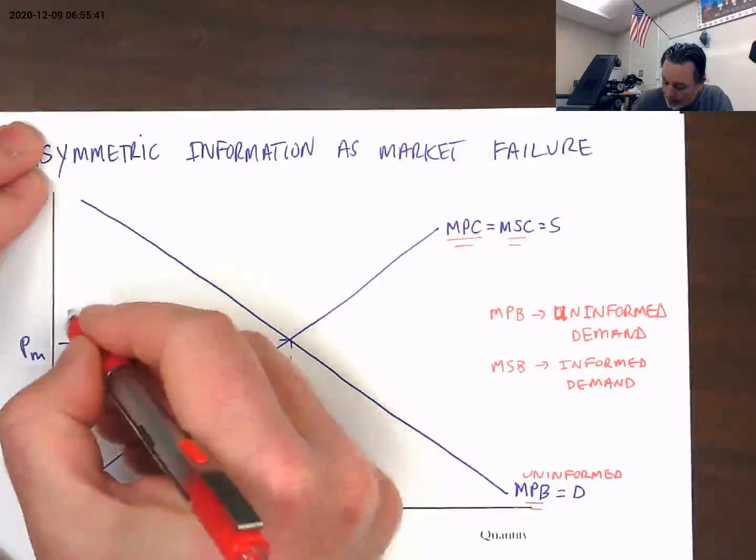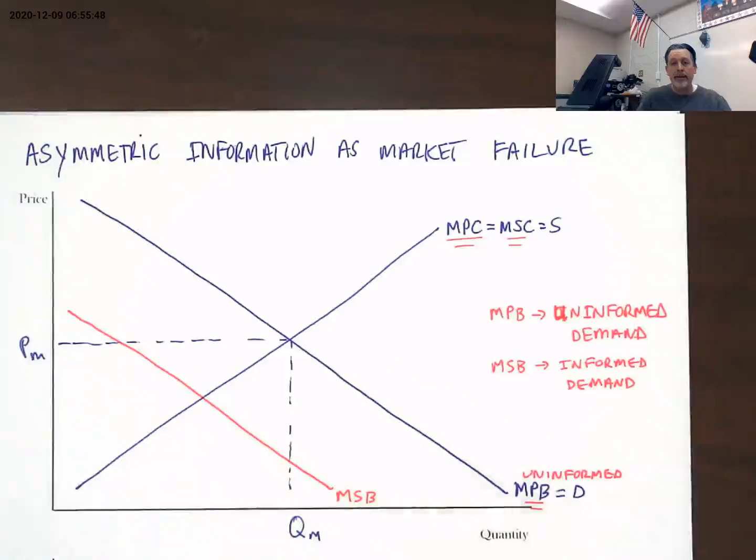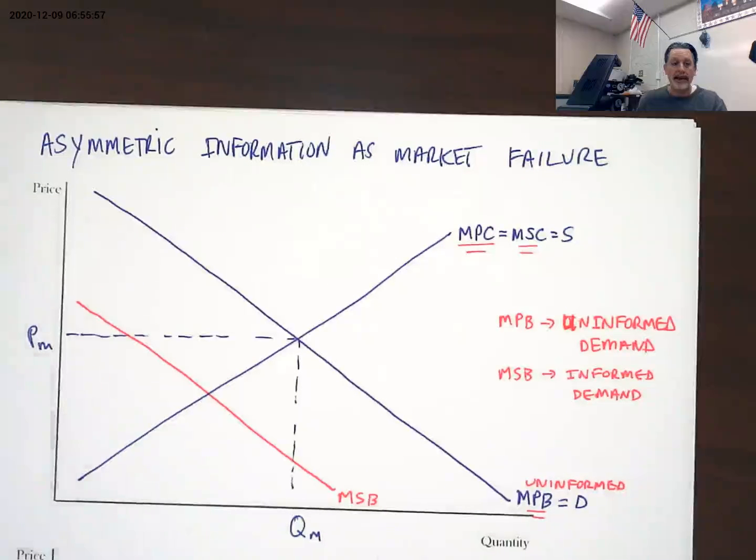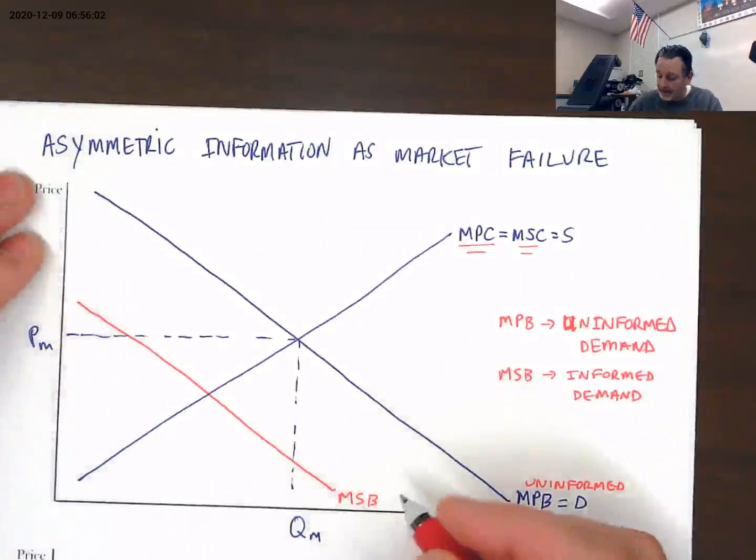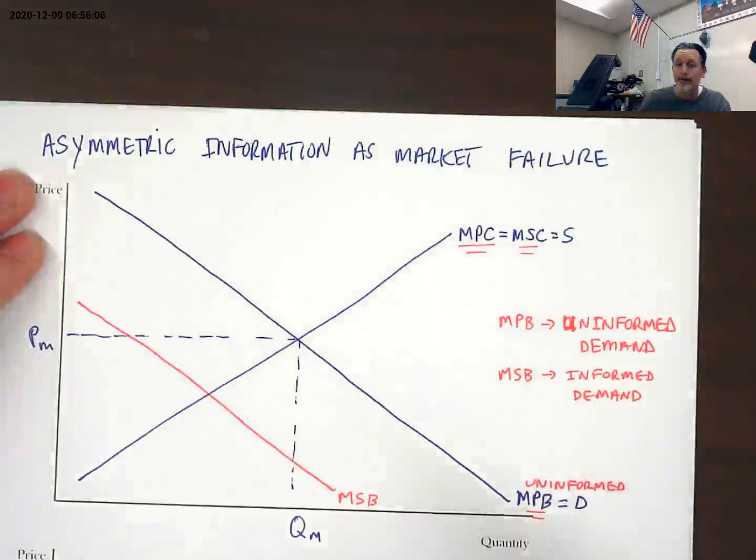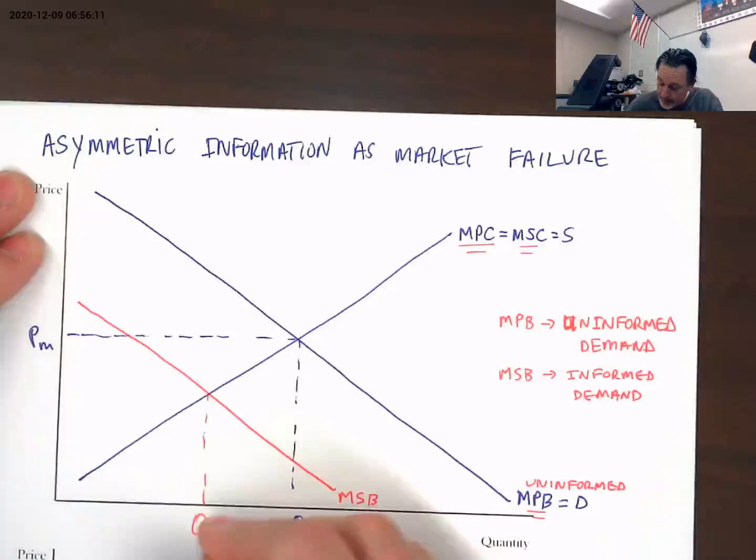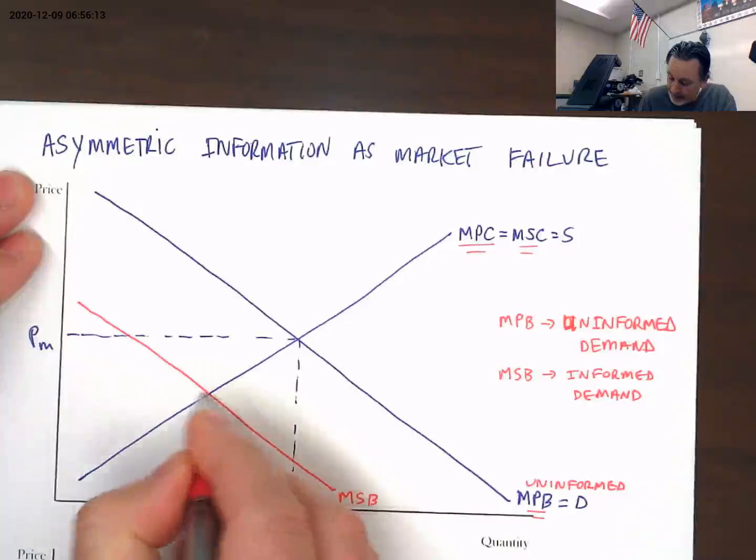What we found in that cigarette example is that the marginal social benefit would have been far to the left of the marginal private benefit. This asymmetric information that existed in the market for cigarettes created a split demand curve where informed demand and uninformed demand created two different demand curves. Our allocatively efficient quantity would have been far less than our market quantity.